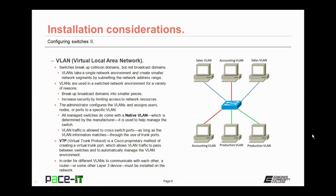VLANs are also used to increase security by limiting access to network resources. The administrator configures the VLANs and then assigns users, nodes, or ports to a specific virtual local area network. All managed switches come with a native VLAN, determined by the manufacturer, which is used to help manage the switch. VLAN traffic is allowed to cross switch ports through the use of trunk ports, meaning VLAN 2 can send traffic across the trunk port to VLAN 2, but not to VLAN 3.